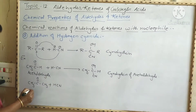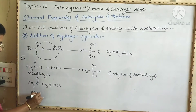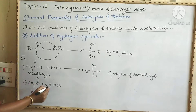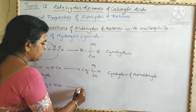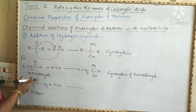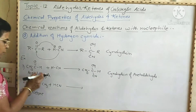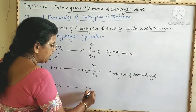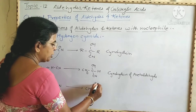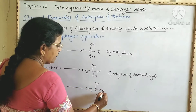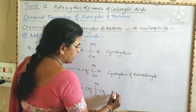The second example is with acetone. When acetone is treated with HCN, addition of HCN takes place across the carbonyl group to form CH₃-C(OH)(CN)-CH₃. This product is called acetone cyanohydrin.